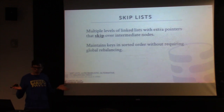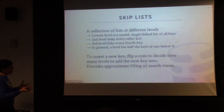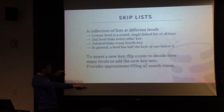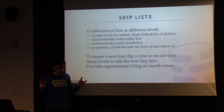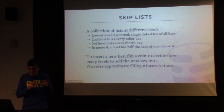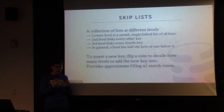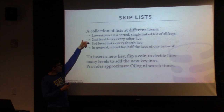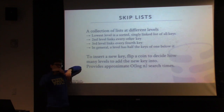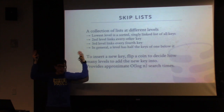The skip list allows us to maintain keys in sorted order without any global rebalancing. Because it's a linked list, you can always insert a new entry and just update the pointers — this doesn't require splitting and merging like in a B-plus tree. You're going to have linked lists at different levels. At the very bottom you have a single-direction linked list with all keys in sorted order. Above that you have extra pointers linking every other key, and at each higher level you have half the links of the previous level. You keep going up until you run out of levels.